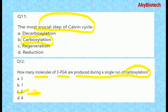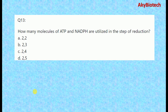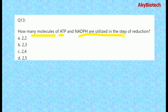Two molecules of 3-phosphoglycerate are produced during a single run. Question thirteen: How many molecules of ATP and NADPH are utilized in the step of reduction/production? The correct answer is two molecules of ATP and two molecules of NADPH are utilized.